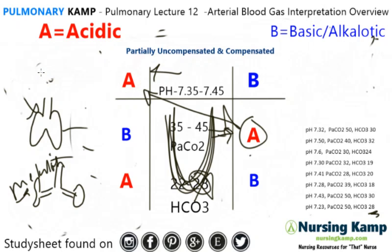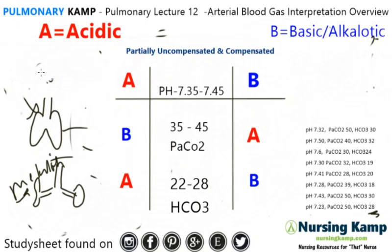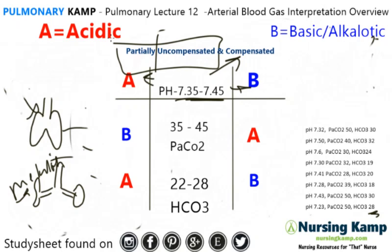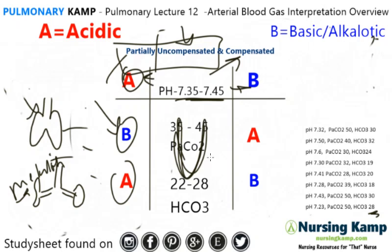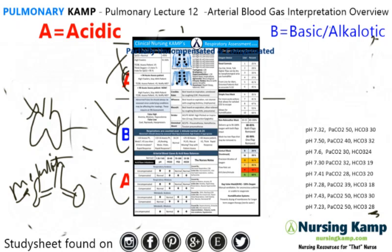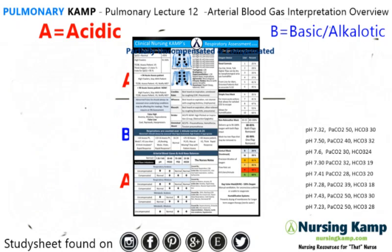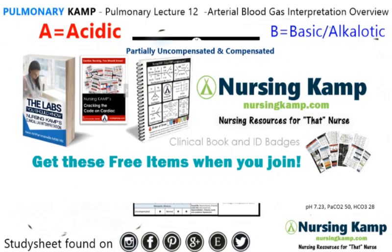That's about it for ABG interpretation. The big thing is: look at the pH first. If it is normal, it's compensated — then further interpret. If it is abnormal, it's either going to be partially or uncompensated. Partially compensated means everything is circled on the peripheral; if you circle anything in the middle, it is uncompensated. That's ABG interpretation and advanced ABG interpretation. I can be found on Instagram, Facebook, Pinterest, and Etsy, and nursingcamp.com where you can download my sticky notes. Nurse on and we'll see you next time.